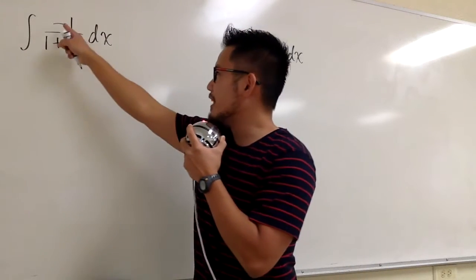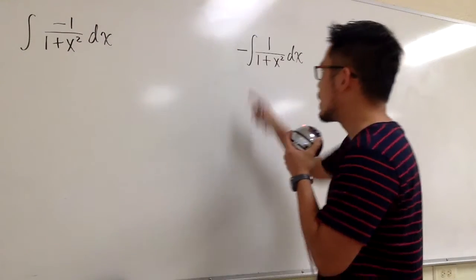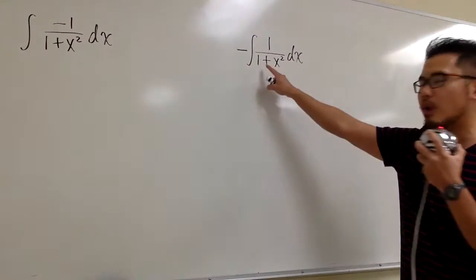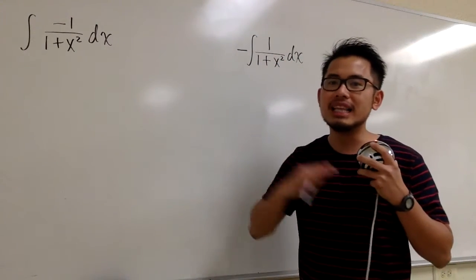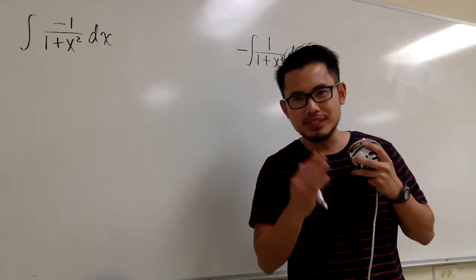Two integrals on the spot. The first one, the integral of negative 1 over 1 plus x squared. The second one, negative integral 1 over 1 plus x squared. And let me tell you, I love these two integrals so much, so let me do this for you guys.